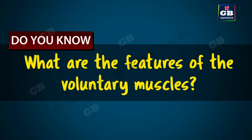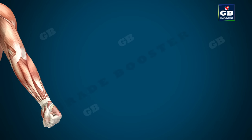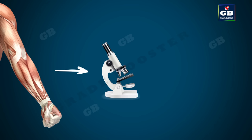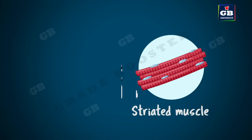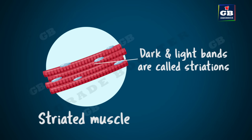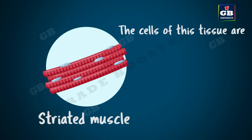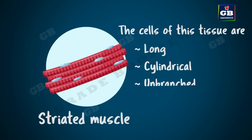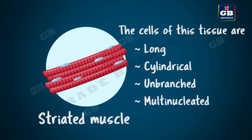If the muscle fibers of voluntary muscles are stained and observed under a microscope, we find striations — dark and light bands — which is why these muscles are also called striated muscles. The cells of this tissue are long, cylindrical, and show no branching. These cells are multi-nucleated, meaning they have many nuclei. In a nutshell, voluntary muscle cells are long, cylindrical, unbranched, multi-nucleated, and striated.